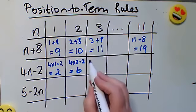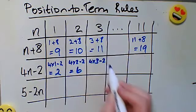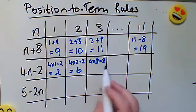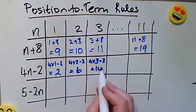The third term, that would be 4 times 3 this time, minus 2. 4 times 3 is 12, take away 2 is 10.